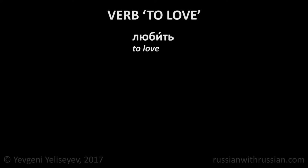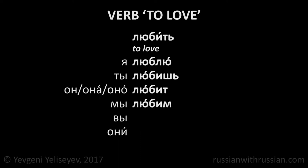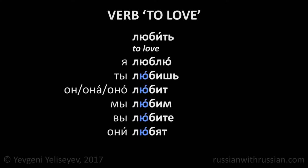To love in Russian is любить. In the present tense, this verb has the following forms: я люблю — I love; ты любишь — you love; он любит — he loves; она любит — she loves; мы любим — we love; вы любите — you love, plural or polite form used when talking to someone we are not on familiar terms with; они любят — they love. As you can see, in the first person singular, the sound Л has been inserted: люблю. In all other forms, the stem stays the same but the stress shifts back one syllable: любишь, любит, любим, любите, любят.